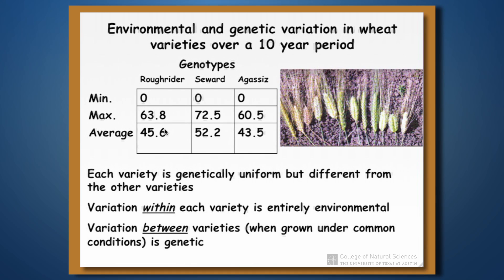If we look between varieties when grown under common conditions — say during the same year — then the difference is genetic. Under the worst conditions, all varieties regardless of genotype produced nothing. But under the best conditions, they produce different amounts of wheat, and that is due to differences in their genetics.